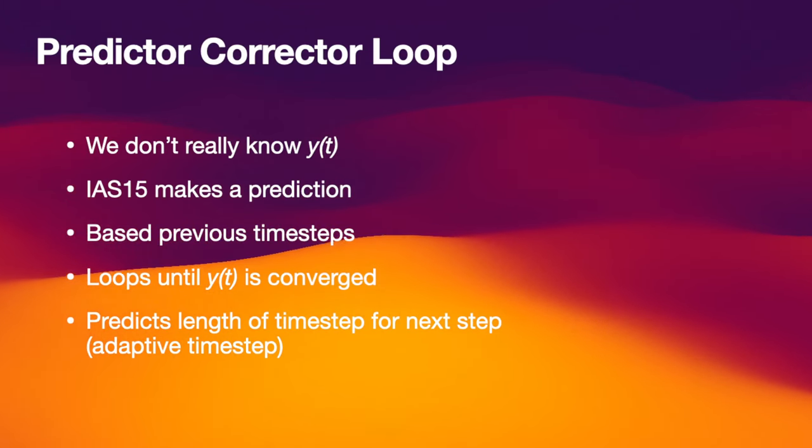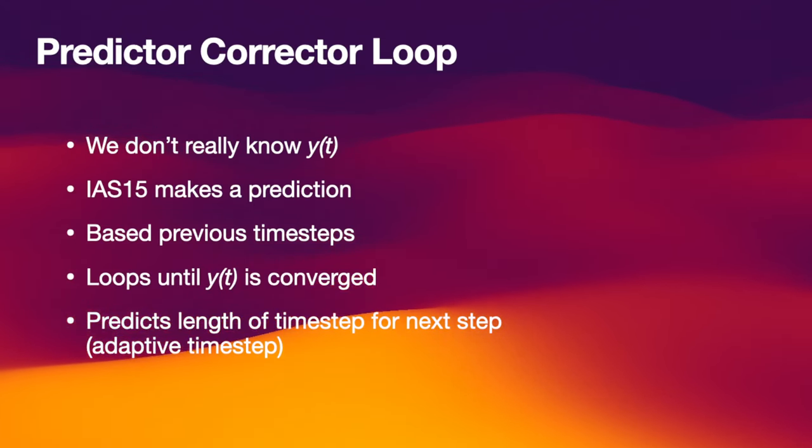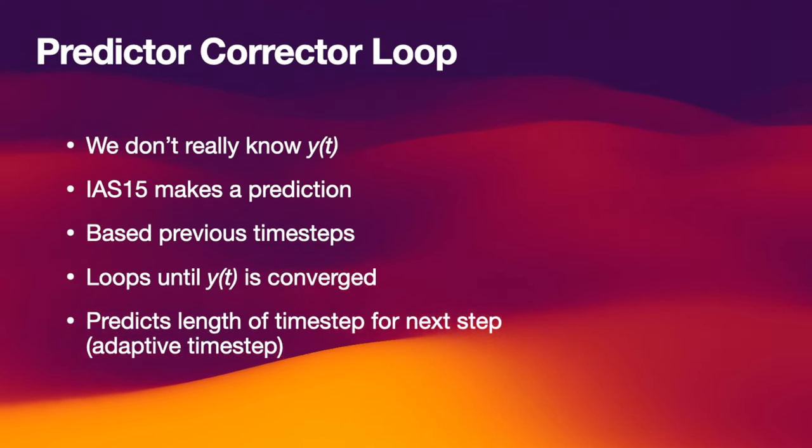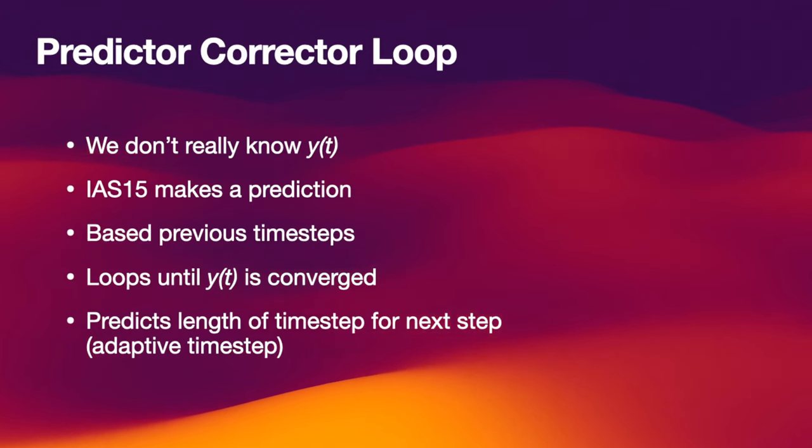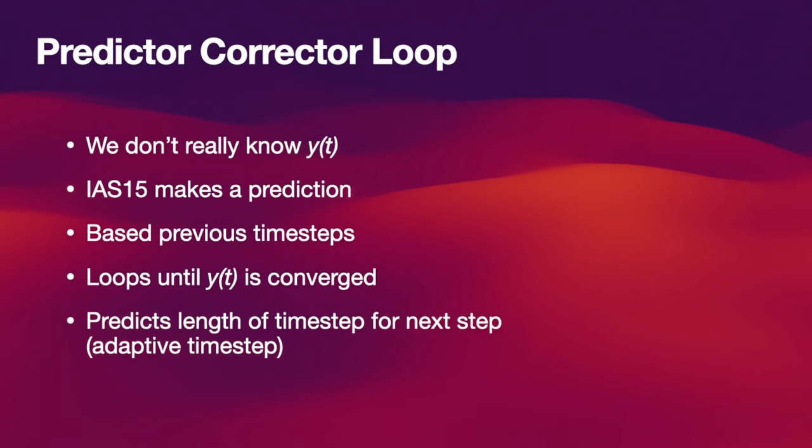IAS15 also tries to predict the length of the next time step. This is important because if the time step is too long, you might need many predictor-corrector loops to converge. IAS15 tries to keep the number of predictor-corrector loops that it needs to an absolute minimum. This is essential to making it a fast scheme.